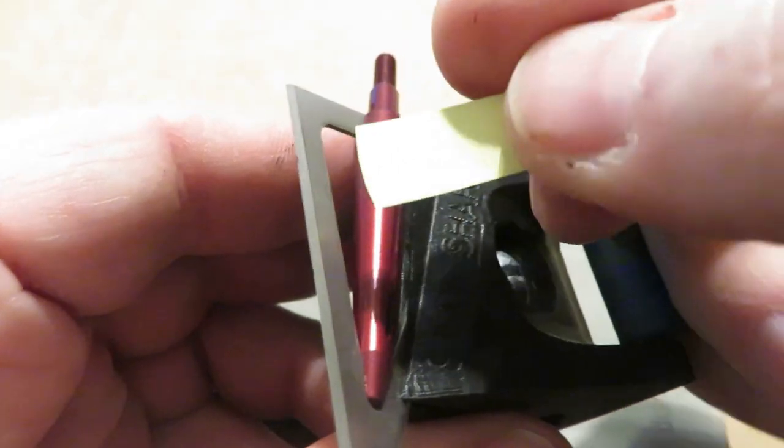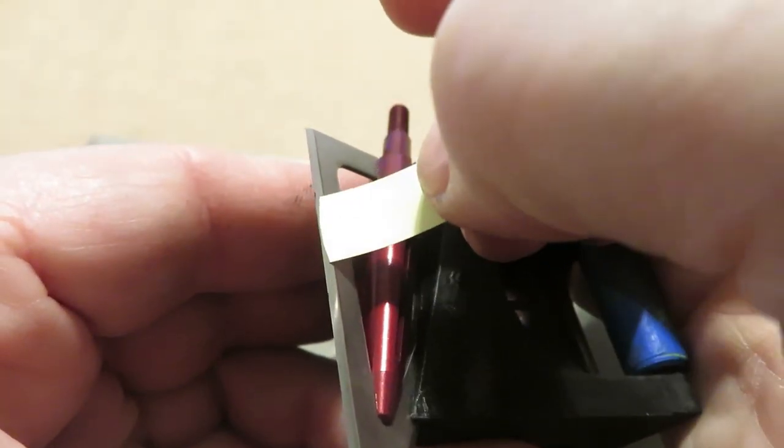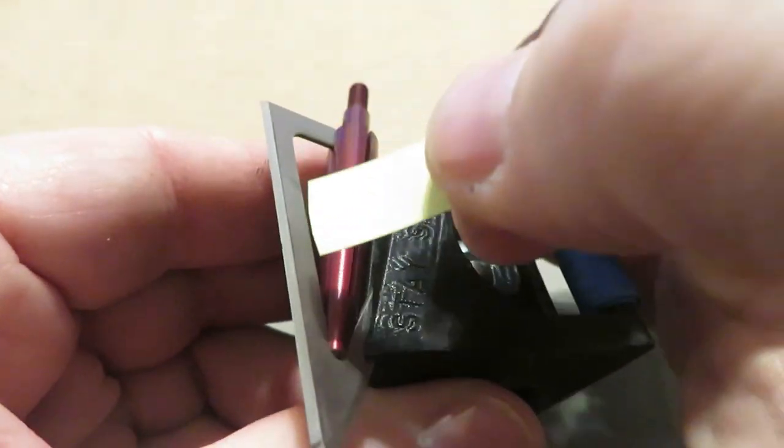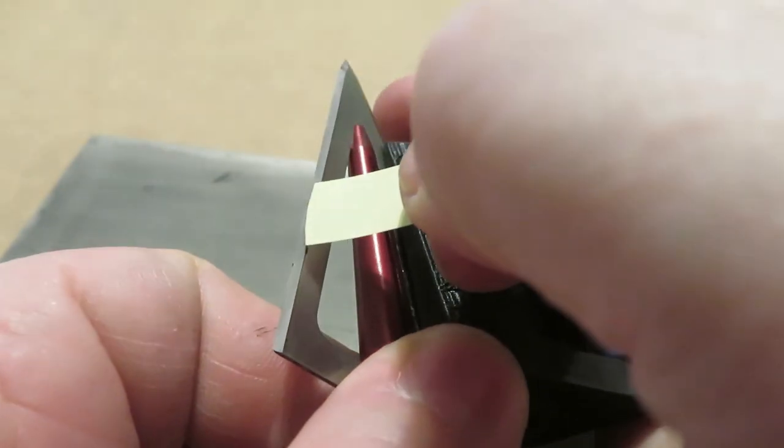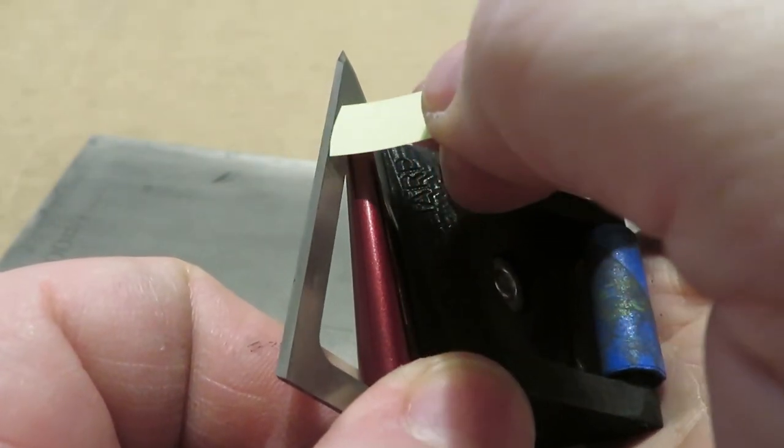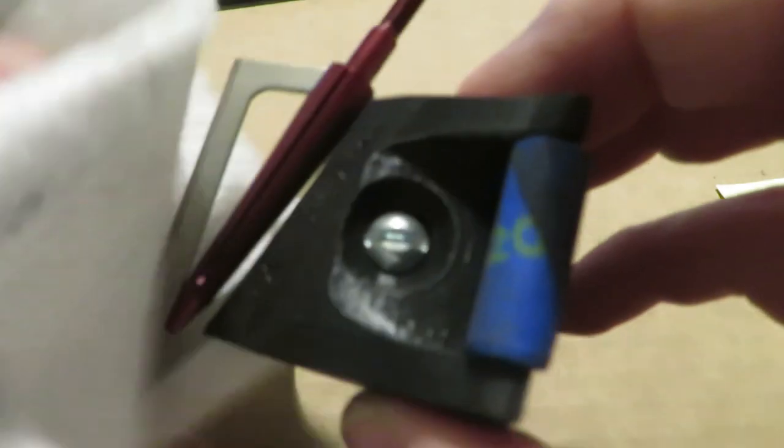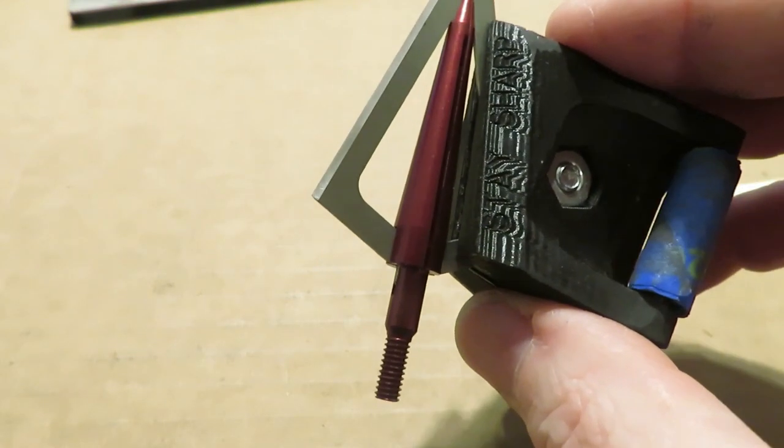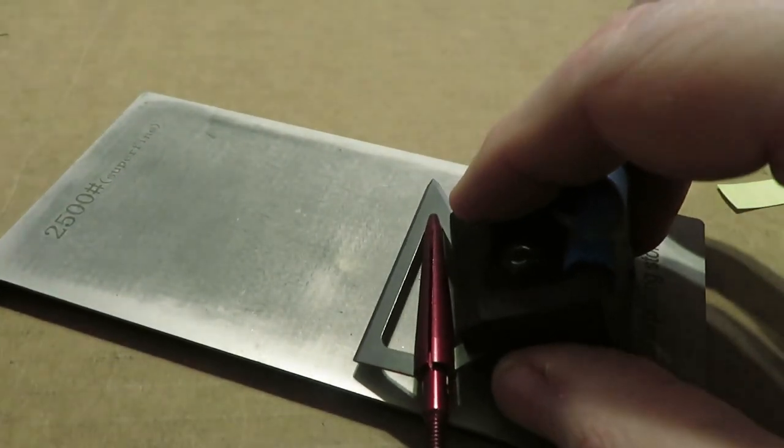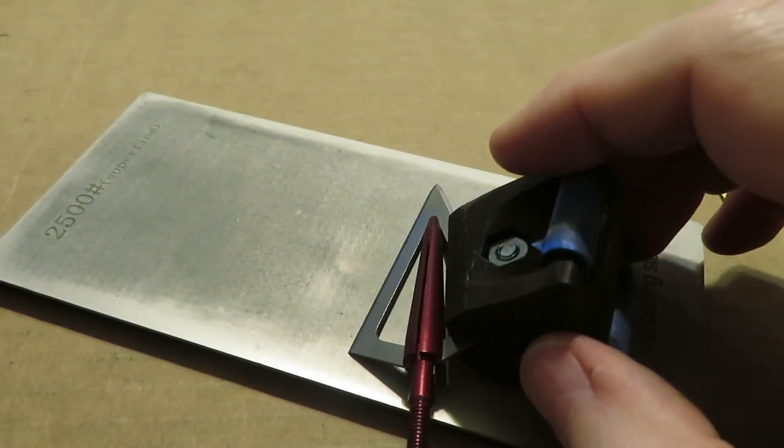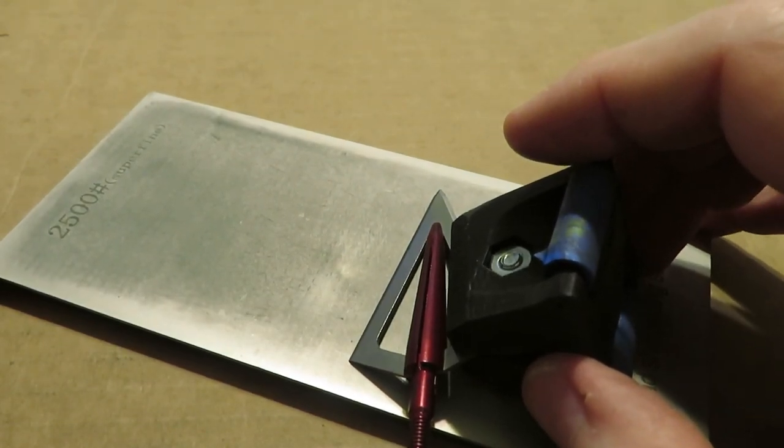You'll see that there is no burr. There is nothing for the paper to catch on. So now we will again clean off the head, the rollers. We want to make sure we're not going to transfer any of the 1200 debris to 2500, and that's where we're going to go next. I will get a burr on this side, break it off, get a burr on the second side and I will be back.